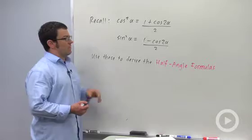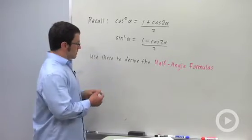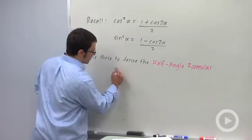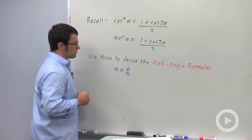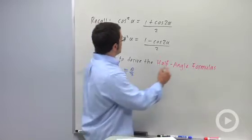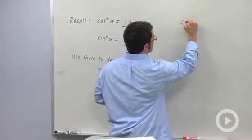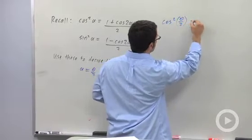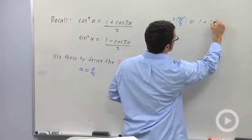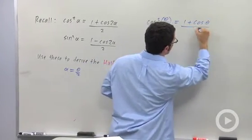Now, the way to derive the half angle formulas is to make the substitution alpha equals theta over 2. If I make that substitution, this becomes cosine squared theta over 2 equals 1 plus cosine theta over 2.